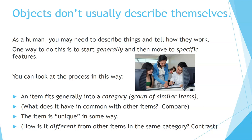Objects don't usually describe themselves. As a human, you may need to describe things and tell how they work. One way to do this is to start generally, then move to specific features. An item fits generally into a category or a group of similar items — what does it have in common with other items? Compare. The item is unique in some way — how is it different from other items in the same category? Contrast.